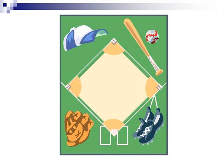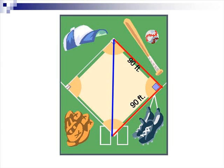Let's take a look at the Pythagorean Theorem in another real-life problem. Can you see a triangle on this baseball diamond? What is the distance for a catcher to make the throw to second base? A baseball diamond is actually a 90-foot square. This can be bisected into two right triangles. The distance from home plate to first base is 90 feet, and the distance from first to second is also 90 feet. Using the Pythagorean Theorem, find the distance a catcher would have to throw from home plate to second base.